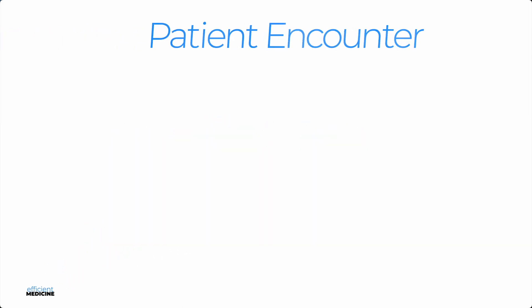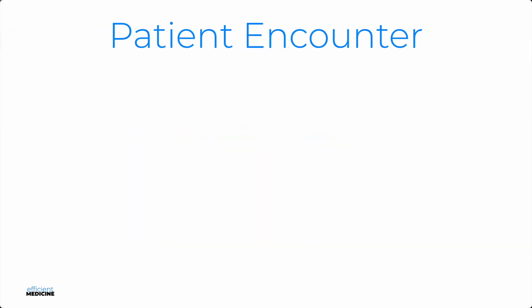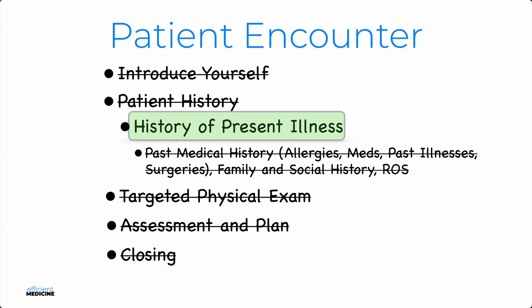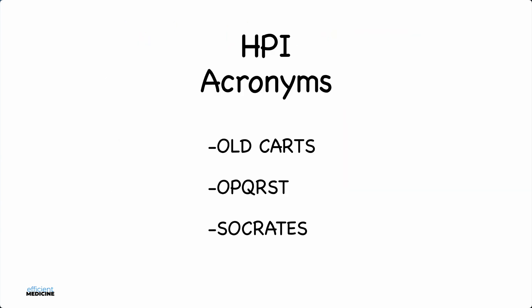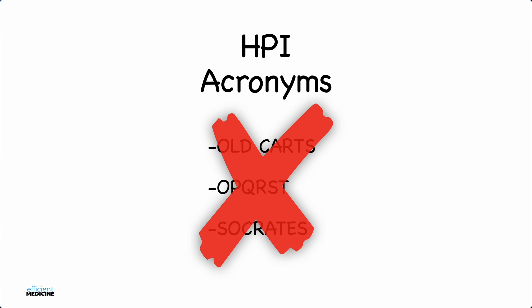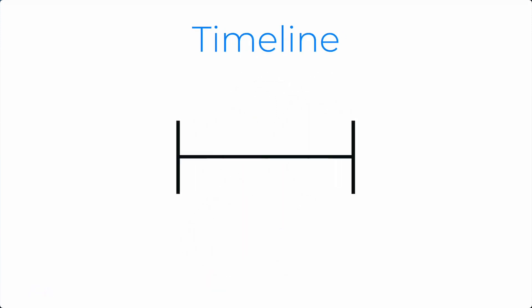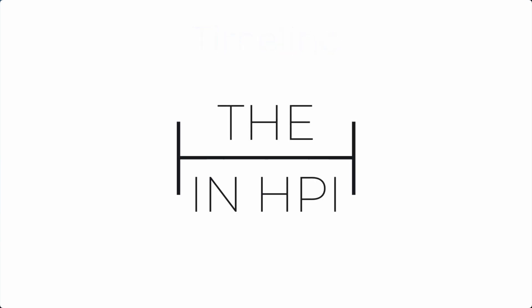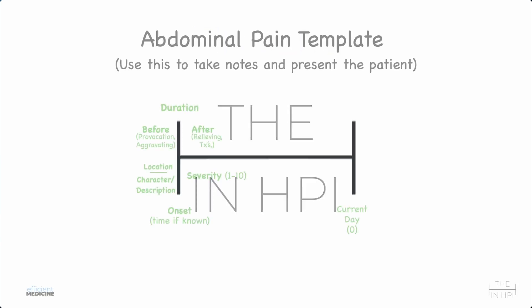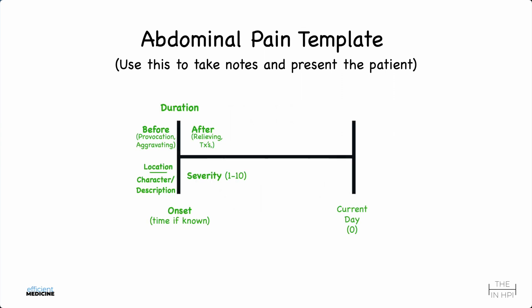In this video, we're going to go through a patient encounter — more specifically, the history of present illness. A lot of students like using acronyms. However, we're going to use a visually enhanced timeline to help us remember what to ask, maintain our organization, and see the big picture. It's called the HNHPI. Let's take a look at a template that you can use to take notes as we go along.